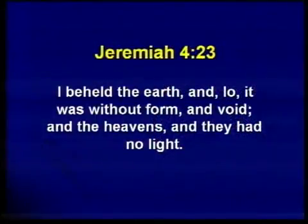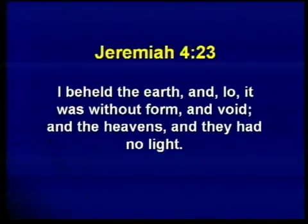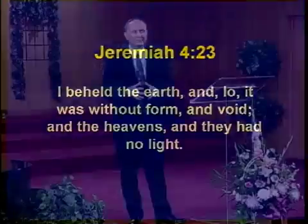In Jeremiah chapter 4 and verse 23, Jeremiah was allowed to see the world as it will be during the thousand years. He says: 'I beheld the earth, and lo, it was without form and void, and the heavens, and they had no light.' Are those the same three characteristics we found in Genesis chapter 1 and verse 2? Yes — without form, void, and darkness over the face of the deep. This world will be reduced or returned to pre-creation chaos.